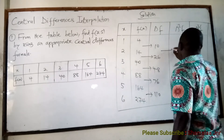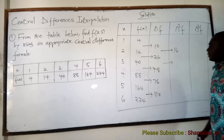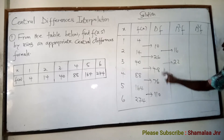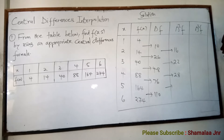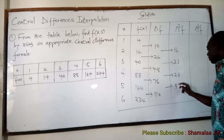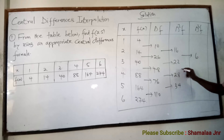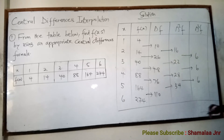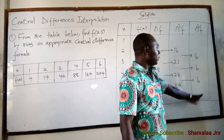Now the second differences: 26 minus 10 is 16, 48 minus 26 is 22, 76 minus 48 is 28, and 110 minus 76 is 34. Then the third differences: 22 minus 16 is 6, 28 minus 22 is 6, 34 minus 28 is 6. When you have a constant value, you have to stop — there is no need to continue, as further differences will be zero.